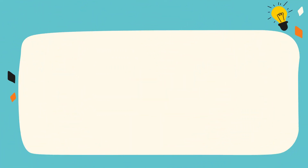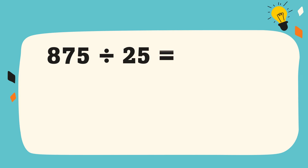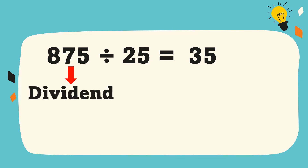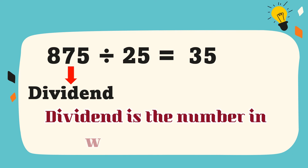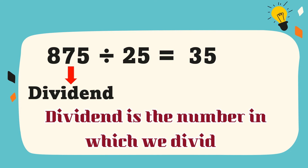Let's study the parts of division. In this example, 875 is the dividend. A dividend is the number which we divide.